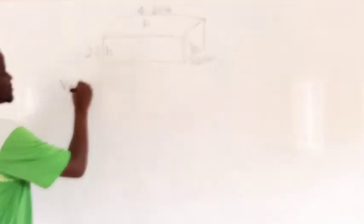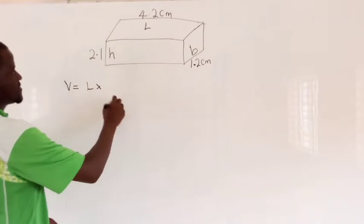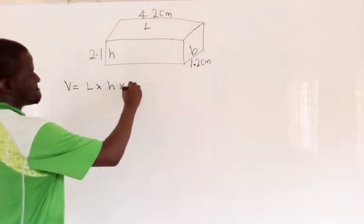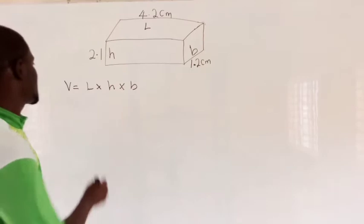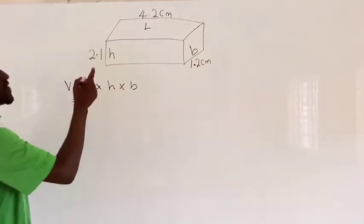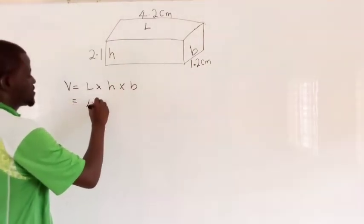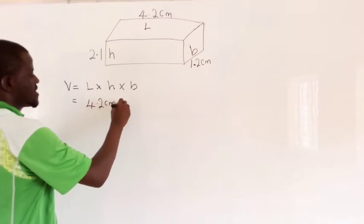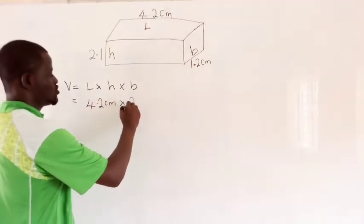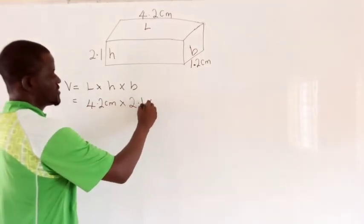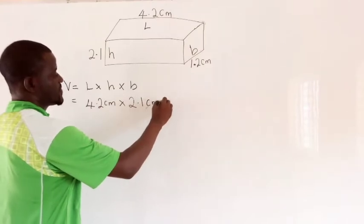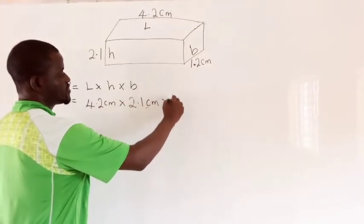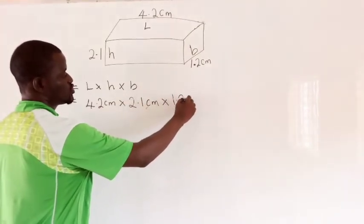is equal to length times height times breadth. Now we have our length 4.2 cm times height 2.1 cm times breadth which is 1.2 cm.